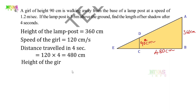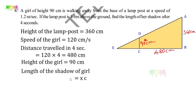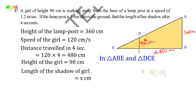We find the length of the shadow of the girl — let that be x. In this picture, we have two triangles: triangle DCE and triangle ABE. E is the common angle in both triangles.